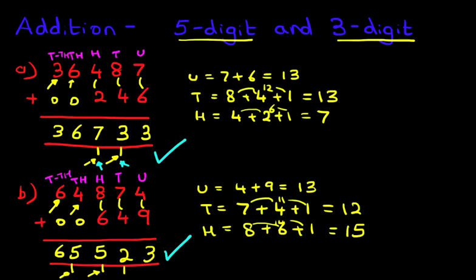So that is how we do addition of a five digit number and a three digit number using the vertical format.